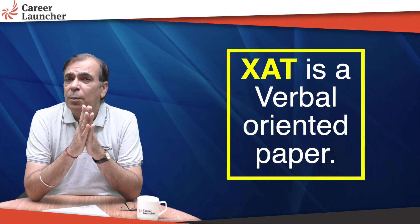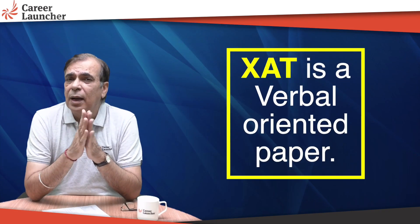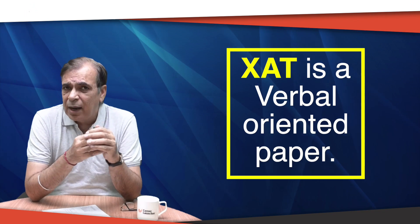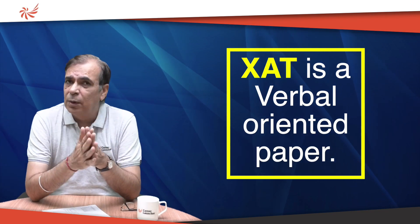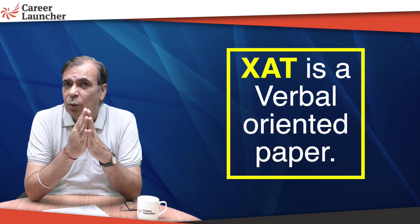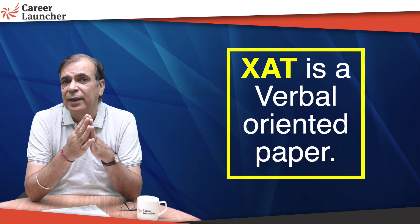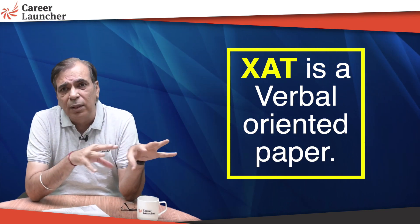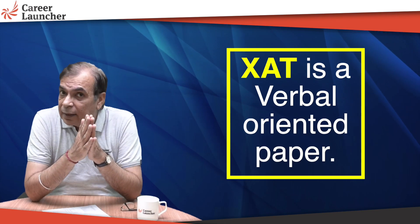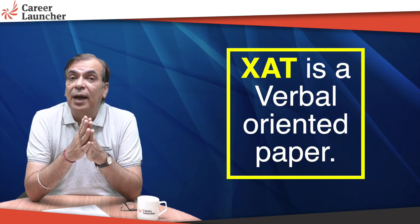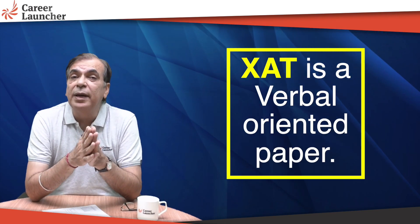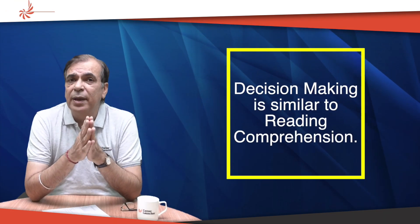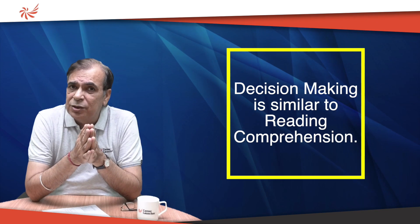Unlike CAT, which is a maths-oriented paper, XLRI or XAT is an English-oriented paper. The verbal reasoning or verbal logic section is more difficult than in CAT. XAT has all kinds of verbal reasoning and the level of difficulty is higher, but unlike CAT, speed is not an issue — understanding is the issue. Secondly, decision-making is almost like reading comprehension.